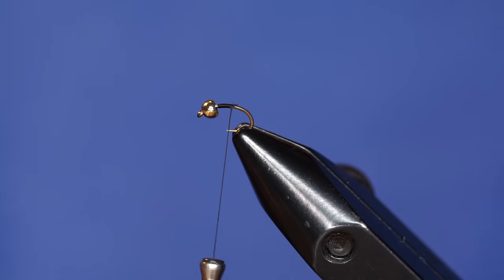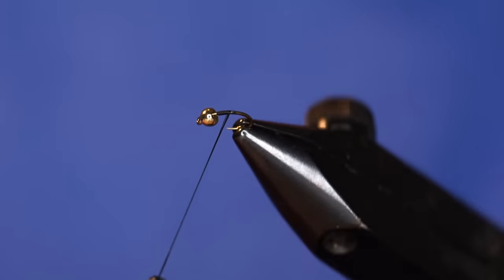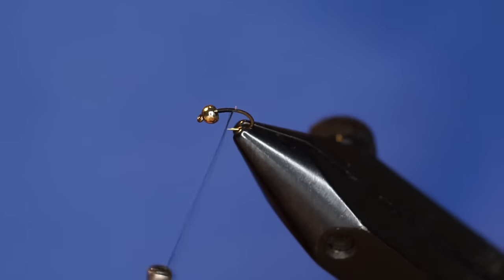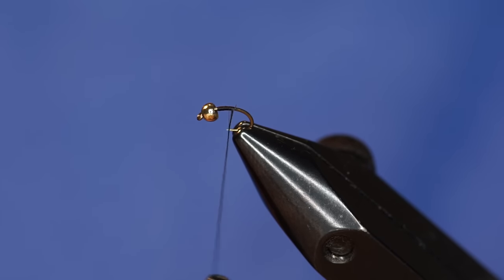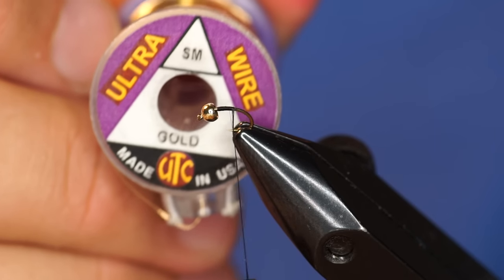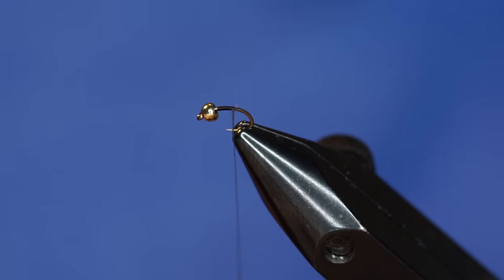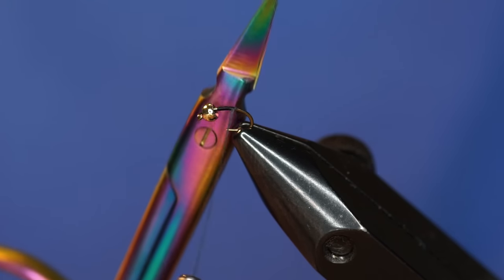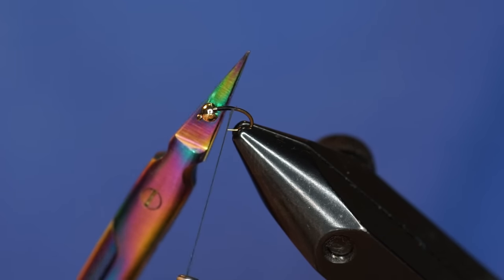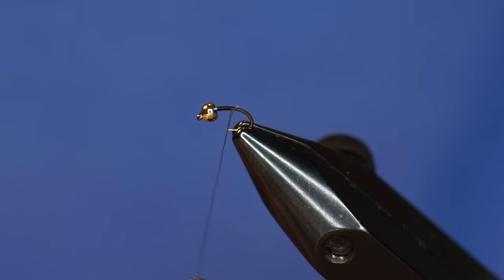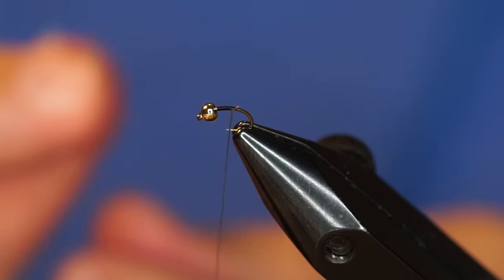This fly is really simple. Before I even take my thread back down the bend, I'm going to take some small UTC wire in gold and trim off a little bit. I always use some alternate scissors so you don't cut wire with your good scissors. I'm going to cut off a chunk.